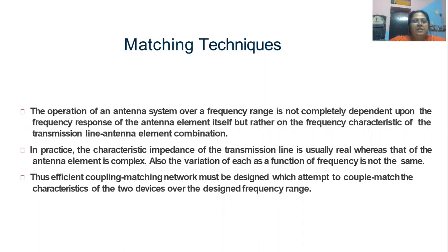The operation of an antenna system over a frequency range is not completely dependent upon the frequency response of the antenna element itself, but rather on the frequency characteristics of the transmission line and antenna element combination. In practice, the characteristic impedance of the transmission line is usually real whereas that of the antenna element is complex. So the main importance is that the impedance matching is must. Transmission line impedance is real and we have to match with the impedance of the antenna which is complex in nature.